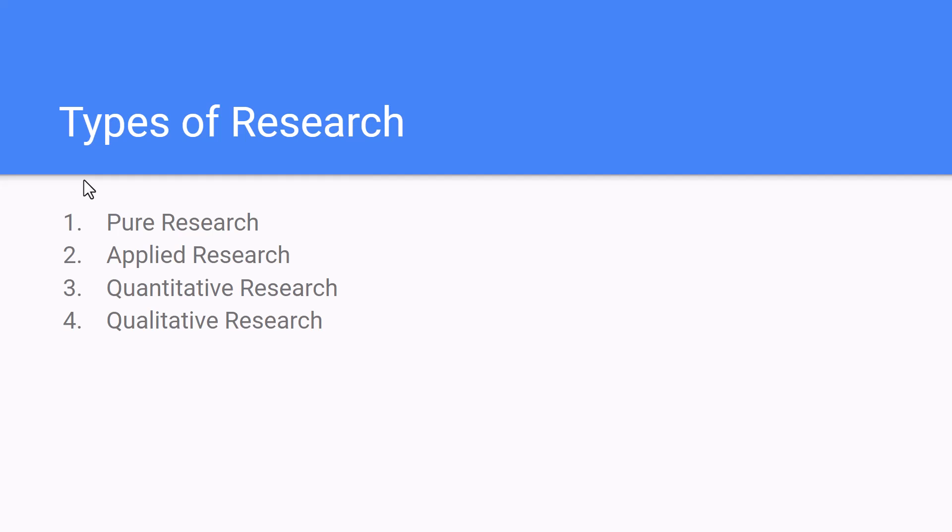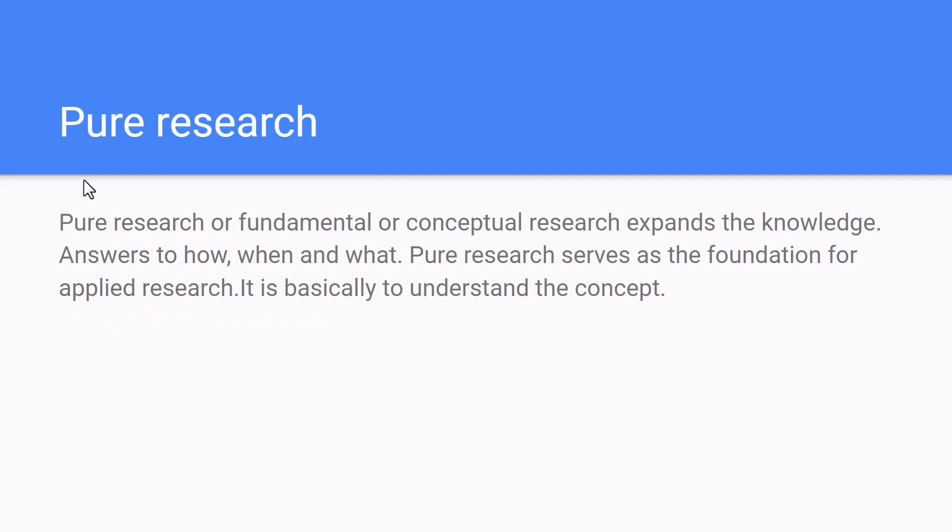There are different kinds of research, categorized as pure research, applied research, quantitative research, and qualitative research. Pure research is also known as fundamental or conceptual research — remember these names: pure, fundamental, and conceptual research.